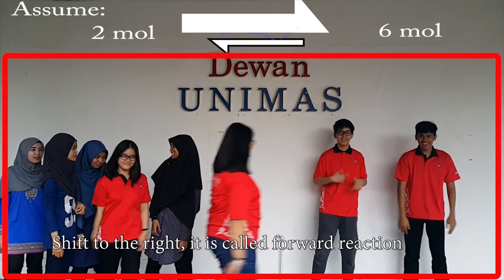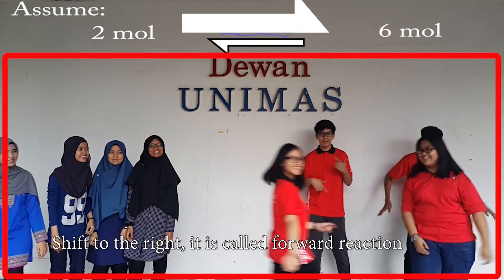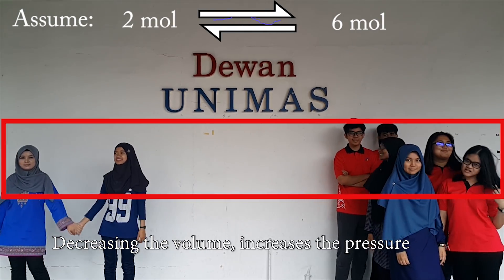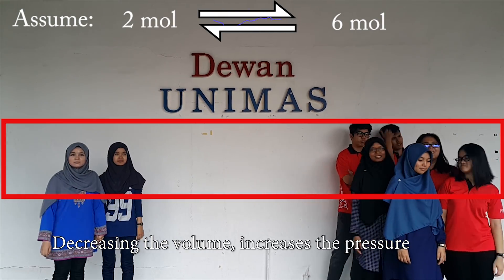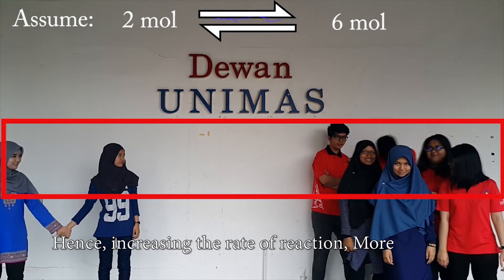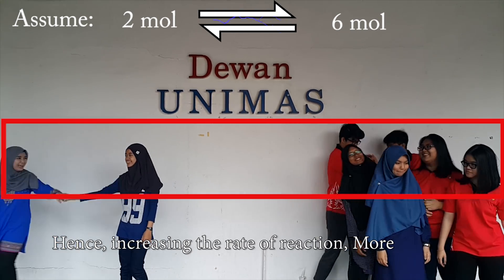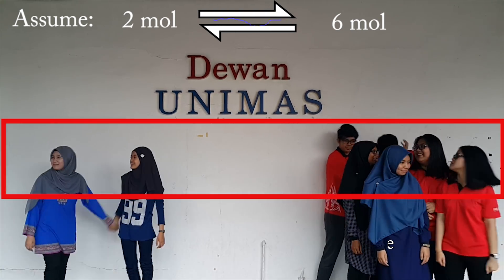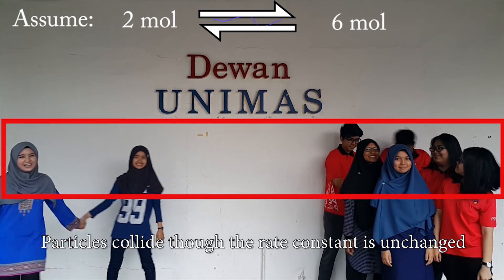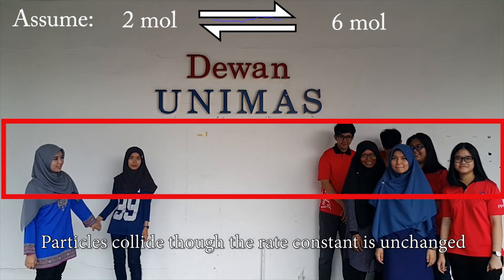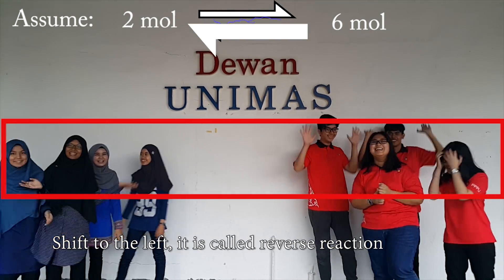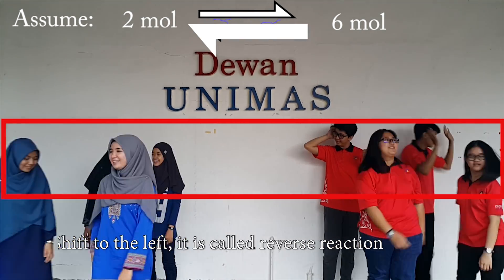Shift to the right — it is called forward reaction. Decreasing the volume increases the pressure, as we're increasing the rate of reaction more. Particles collide more; the rate constant is unchanged. Shift to the left — it is called reverse reaction.